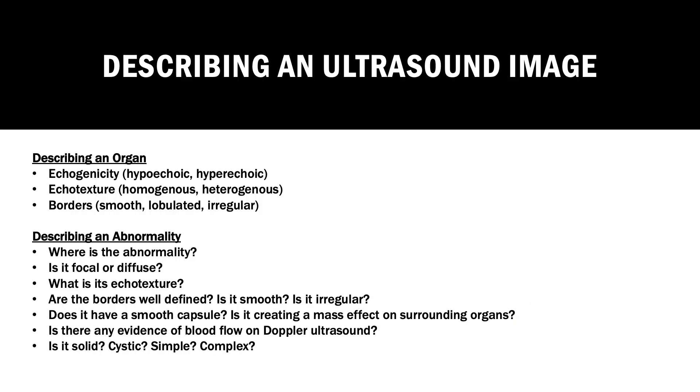Now when we describe an ultrasound image, we'll always describe an organ and we'll describe any abnormalities that we find. When we're describing an organ, we'll describe the echogenicity, the echotexture, and the borders. When we describe an abnormality, we can describe where the abnormality is, whether it's focal or diffuse, the echotexture of the abnormality. We can describe whether the borders are well-defined, are they smooth or irregular. We can explain whether or not it has a mass effect on surrounding organs, and we can discuss whether or not there's blood flow that is seen on Doppler ultrasound. We can talk about the components of this mass by describing whether we think it's solid, whether it's cystic, simple, or complex.